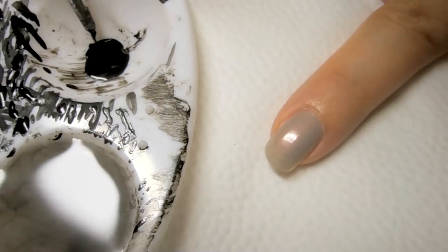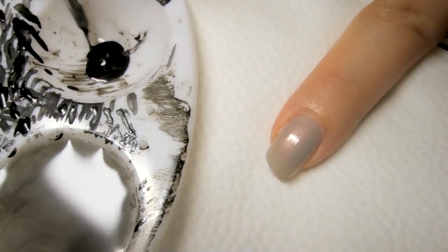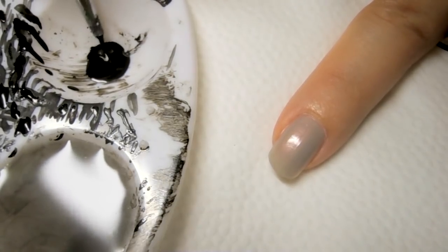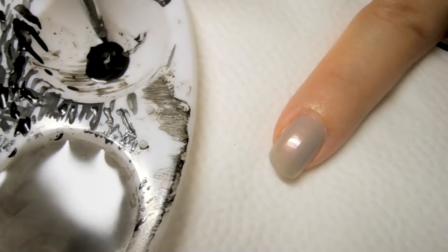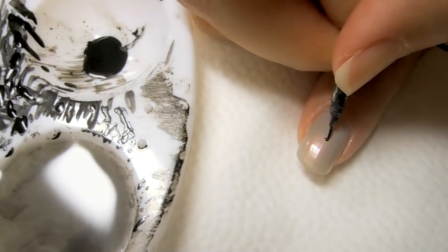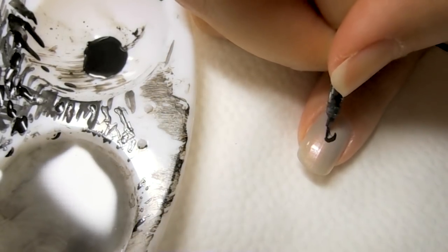For this finger, I'm actually going to draw the whole spider. So what we want to do is draw a big circle and a tiny circle. And because the nail is small, even the big circle, you don't want to draw it too big.